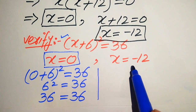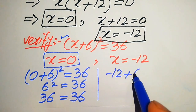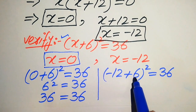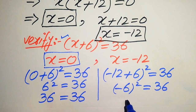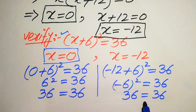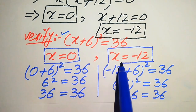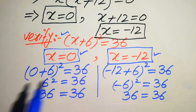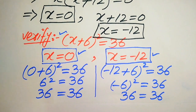For x = -12: substituting gives (-12 + 6)² = (-6)² = 36 = 36. Both sides are equal, confirming that x = -12 also satisfies the equation. So the two verified solutions of the given equation are x = 0 and x = -12. This is the final answer.